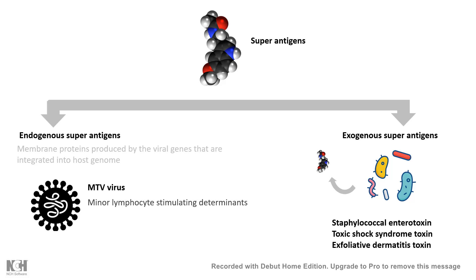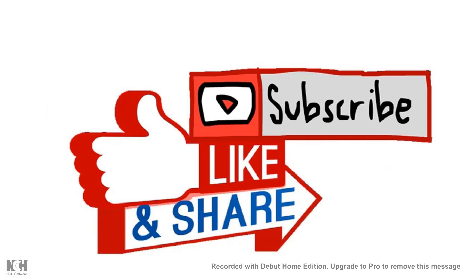One example of an endogenous superantigen is the mammary gland tumor virus (MMTV), which gives rise to a specific membrane-bound antigen known as the minor lymphocyte stimulating determinant, or Mls. This can lead to huge non-specific T cell activation and overall immune chaos. That concludes this video on superantigens — if you found it informative, please share it with your friends and don't forget to like, share, and subscribe.